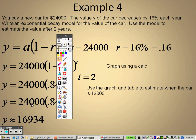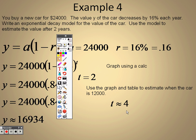And when you go to graph, obviously you won't be able to see a lot of it on the graph. But what you can do is you can go to second and graph. The reason why you can go to second graph is it says use the graph and table to estimate when the car is $12,000.